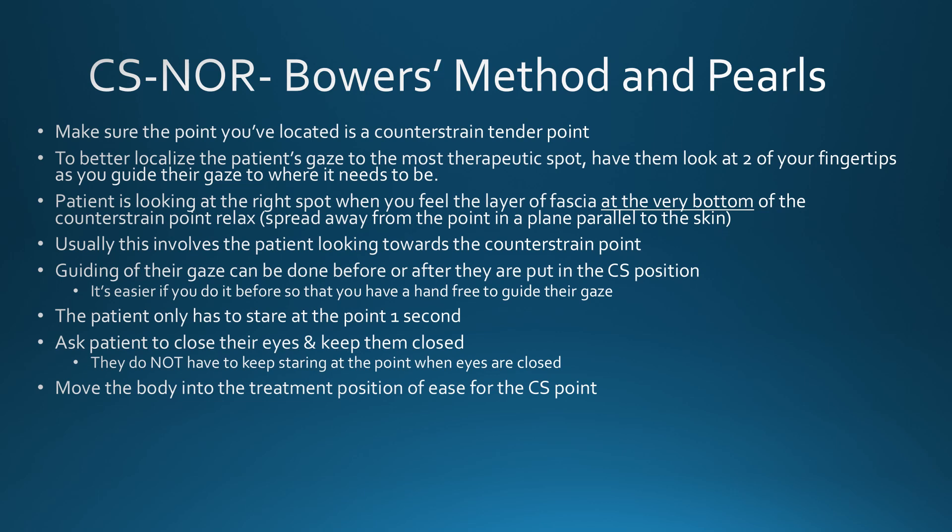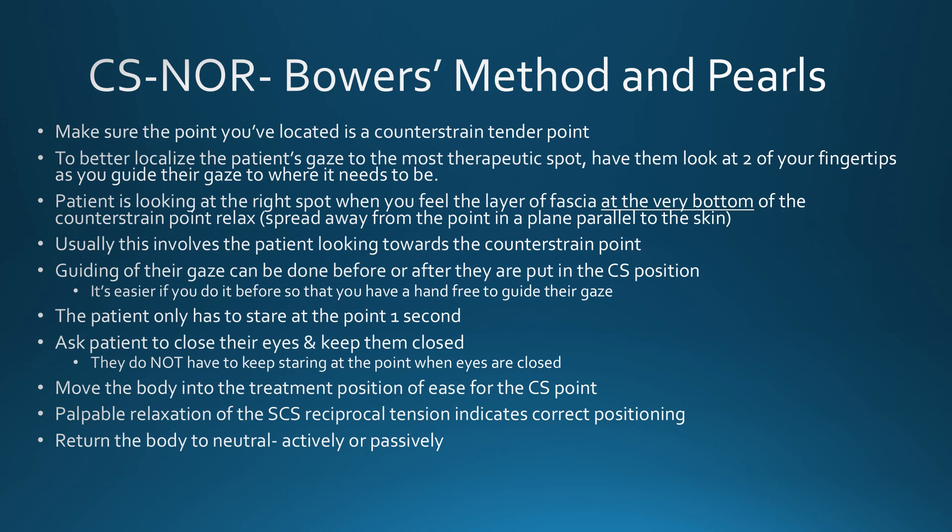When the body has been properly positioned into the strain counterstrain position — in other words, you've folded around the counterstrain tissues and feel that you are straining the reciprocal tissues on the opposite side — there will be a palpable release at the counterstrain point and the line of tension on the strain side also relaxes. This usually takes one to three seconds, but can take a little longer if there is other somatic dysfunction conflicting in the area, particularly other counterstrain points. Now return the body to neutral — that can be done passively or actively, which means you can even treat your own counterstrain points — and then ask the patient to open their eyes. If they open their eyes before getting to neutral, you most likely have to start over.